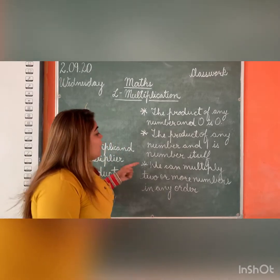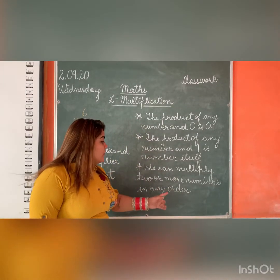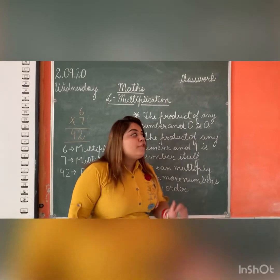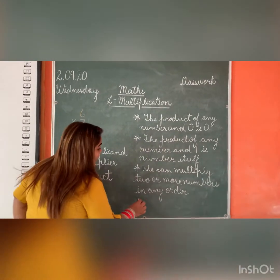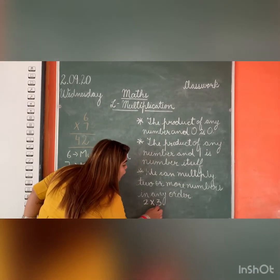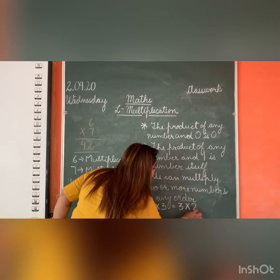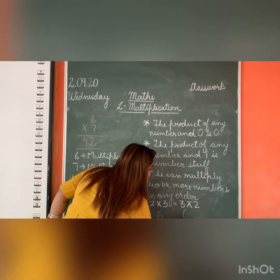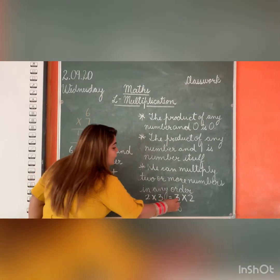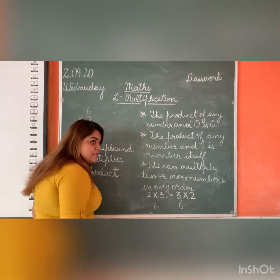So next, we can multiply 2 or more numbers in any order. What does it mean? If you multiply 2 multiplied by 3, or you multiply 3 multiplied by 2, you get the answer 6. So if you change the order of the numbers, the product will be the same.